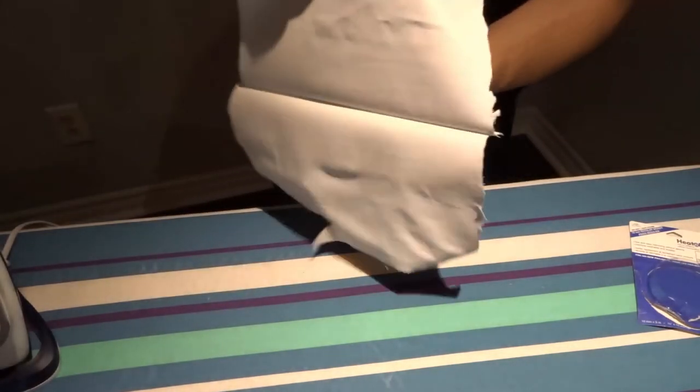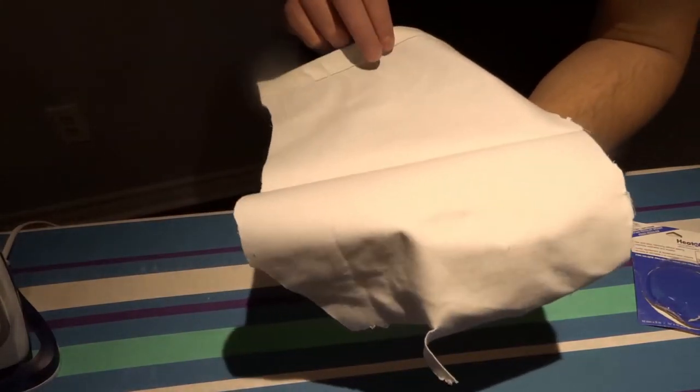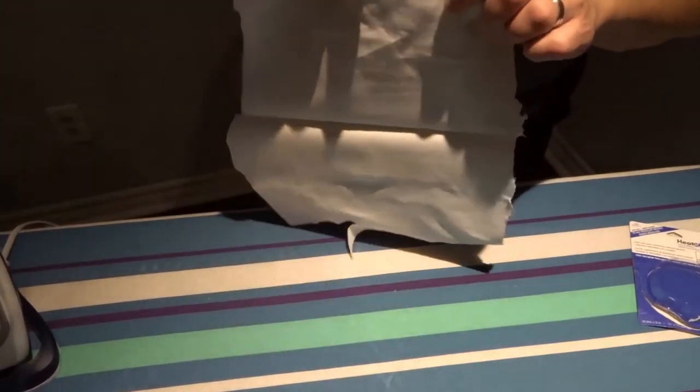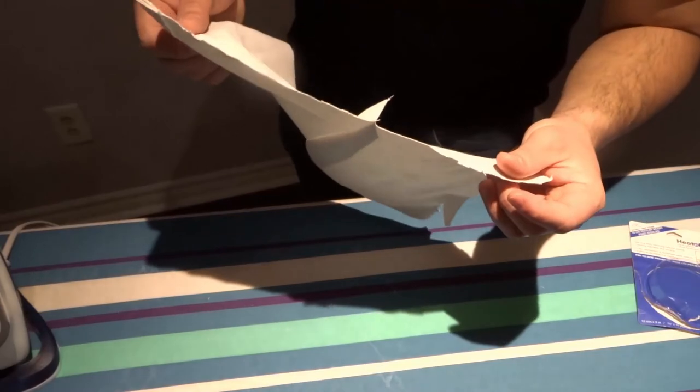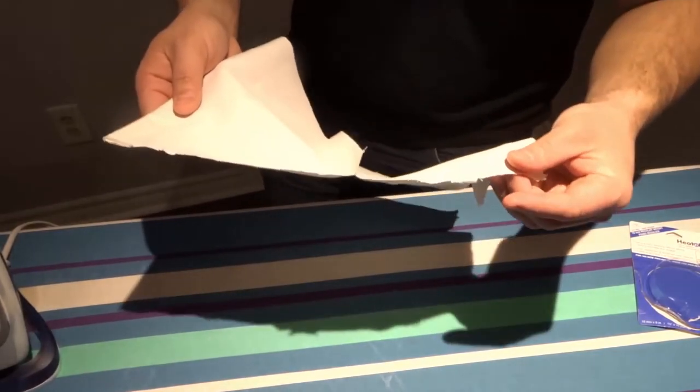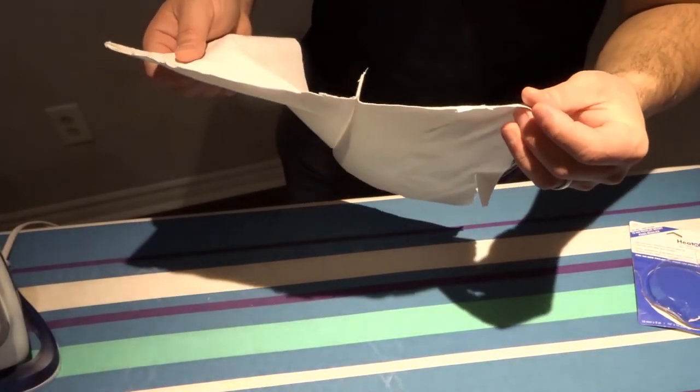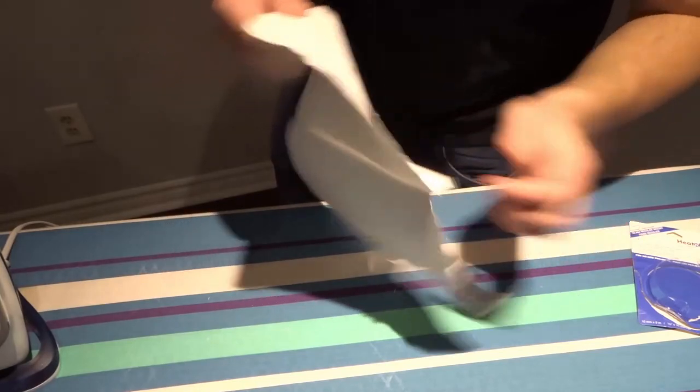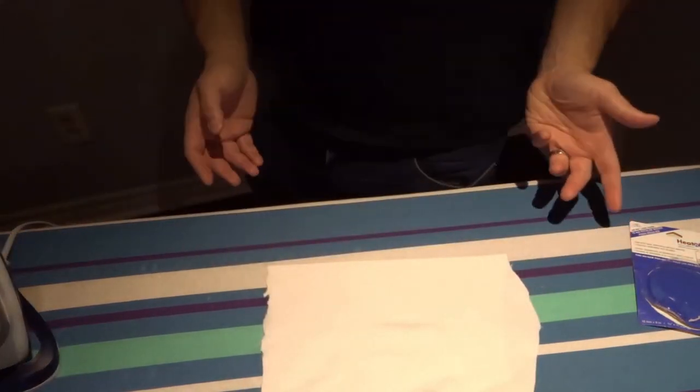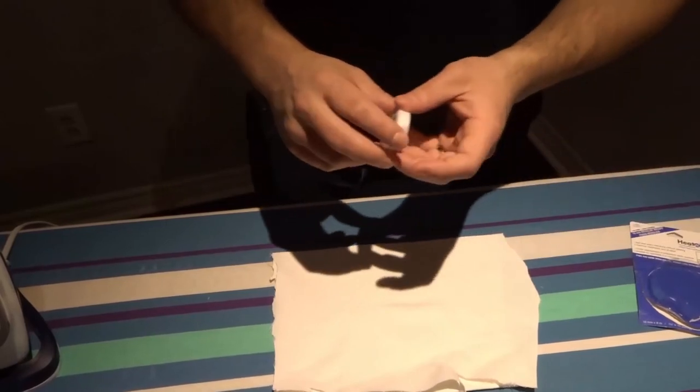So we don't need to go over with the iron again. On occasion you might have to go over one more time, but I would suggest that you take a look at the fabric first, see if it's bonded, and then you can decide whether or not you have to go over it again. But look at that, we made a hem without any sewing using this fabric tape.